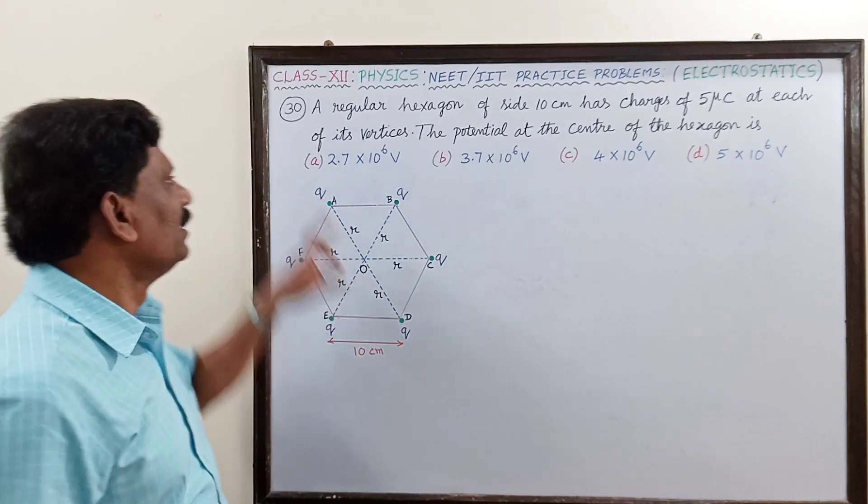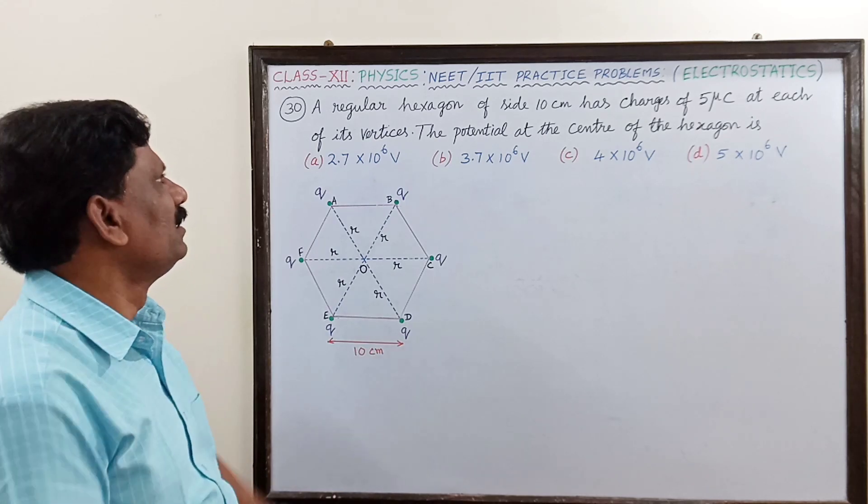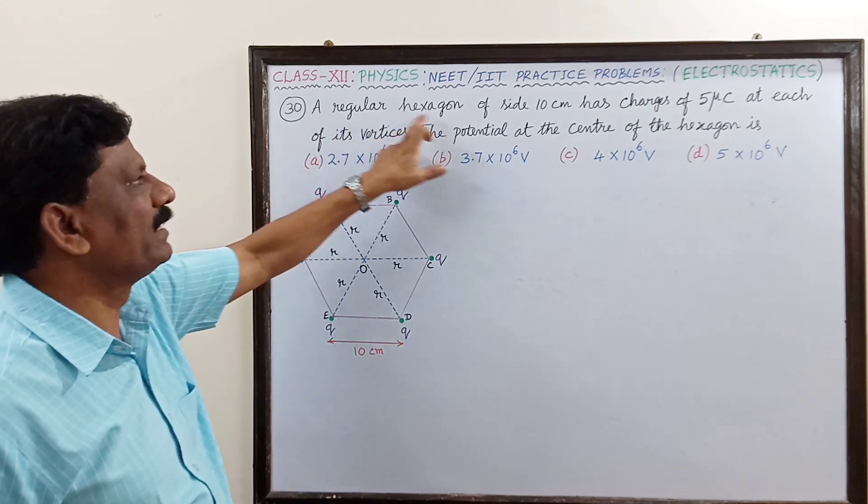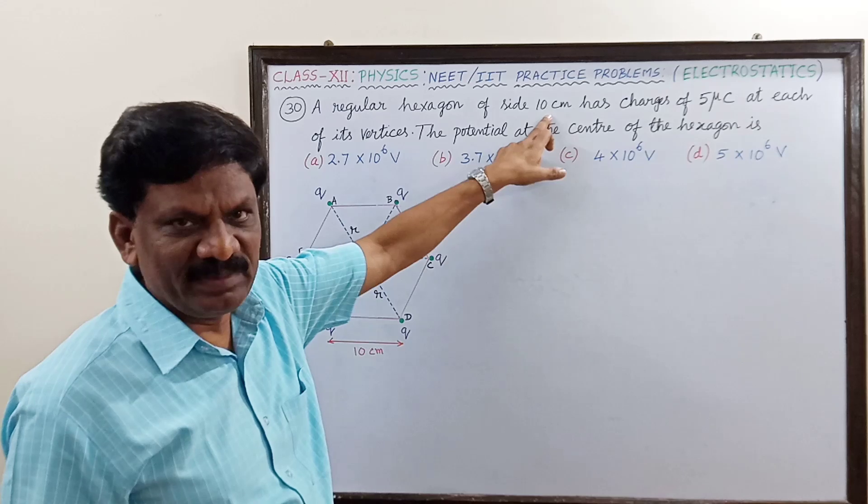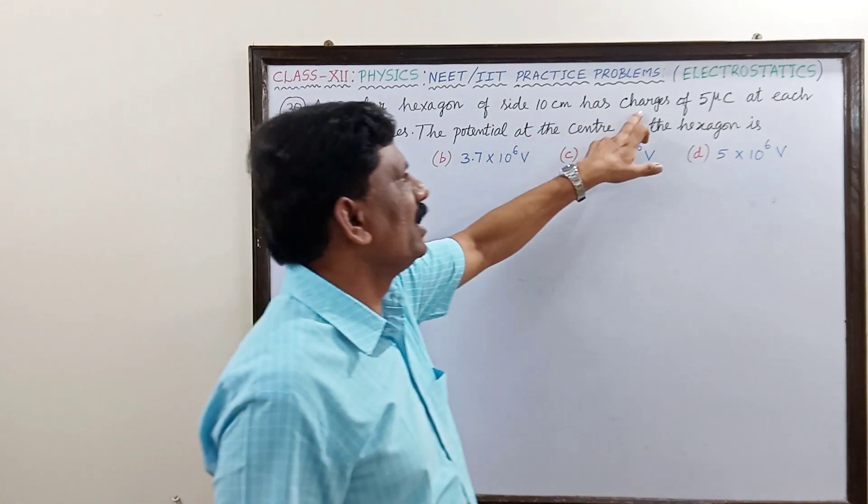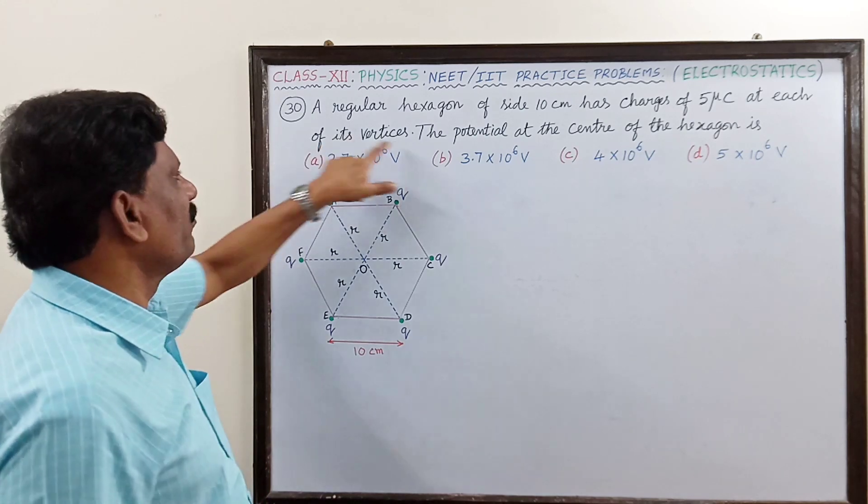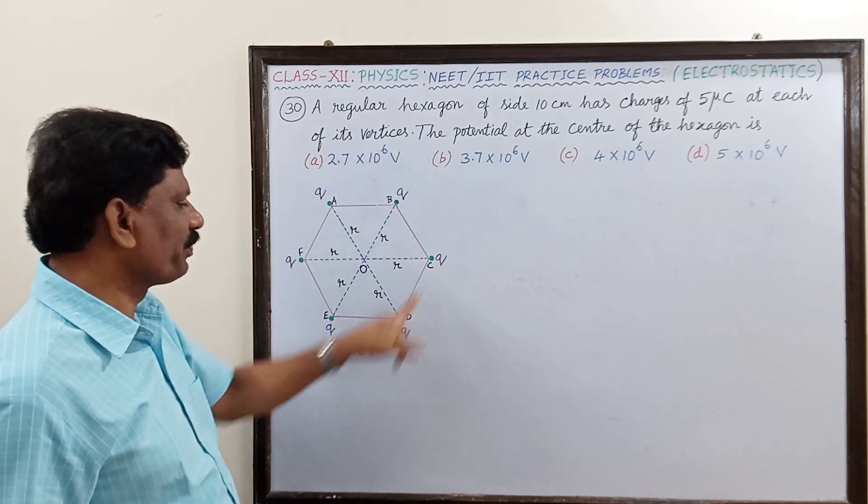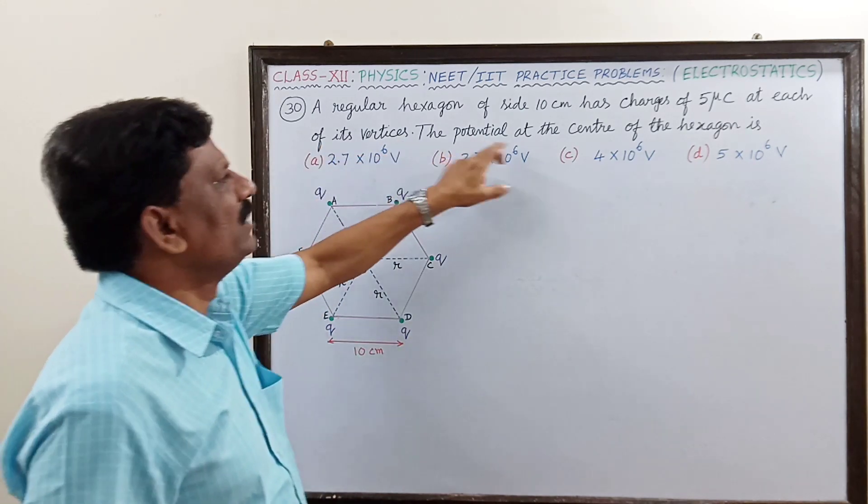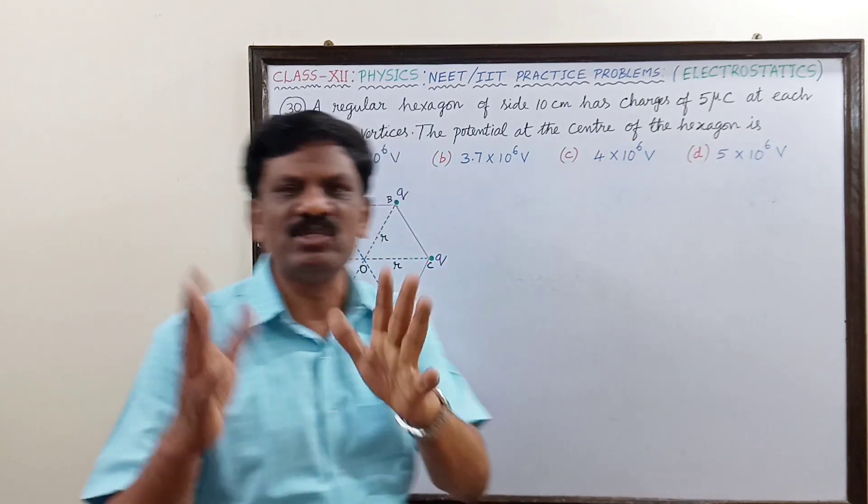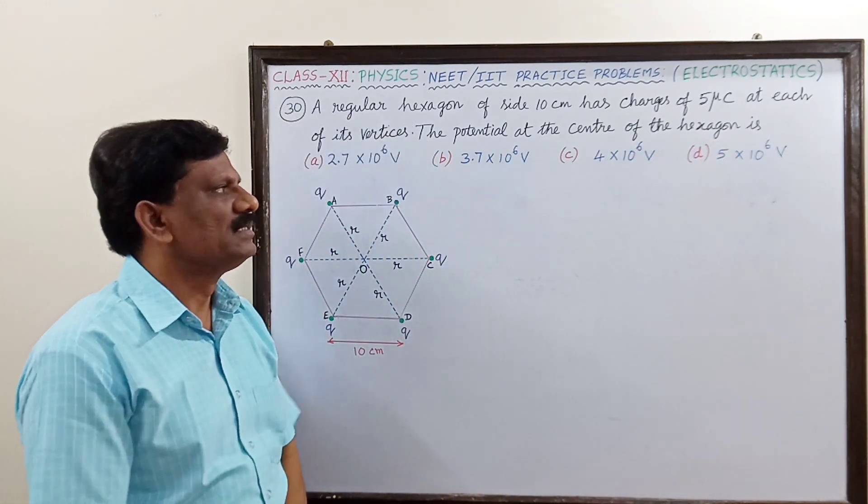Hi students, MCQ number 30: A regular hexagon of side 10 centimeter has charges of 5 micro coulomb at each of its vertices. The potential at the center of the hexagon has to be determined. It's a very standard question, a very easy question which is repeated in competitive examinations.